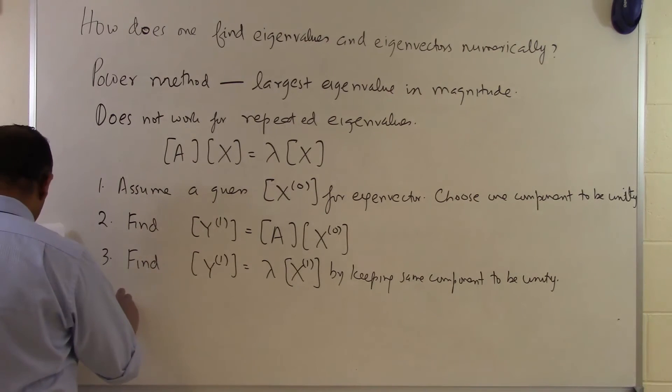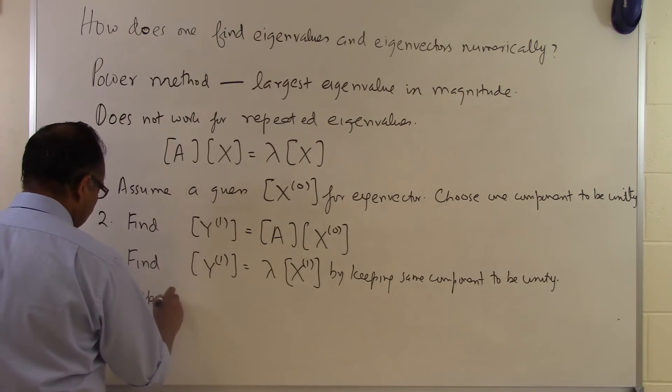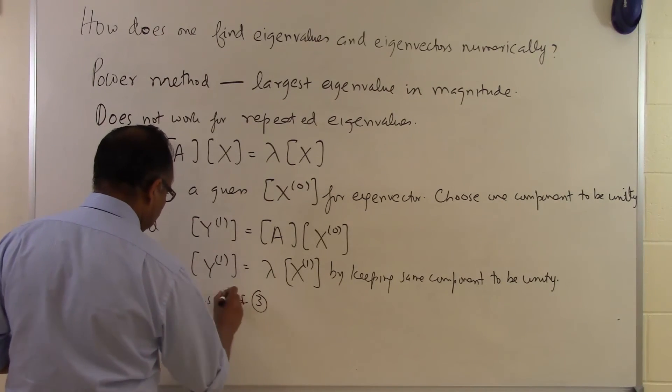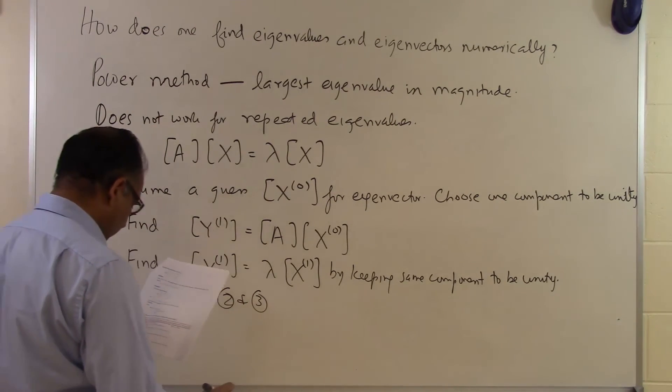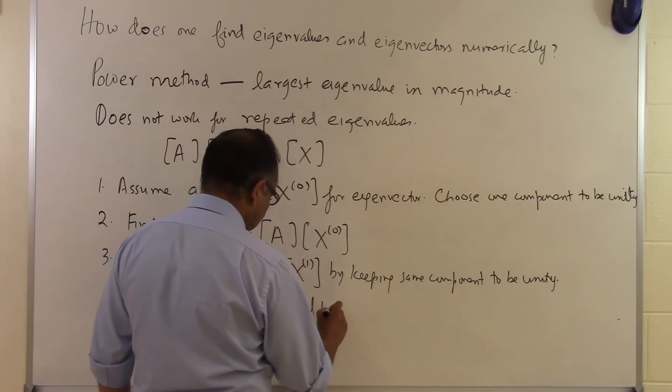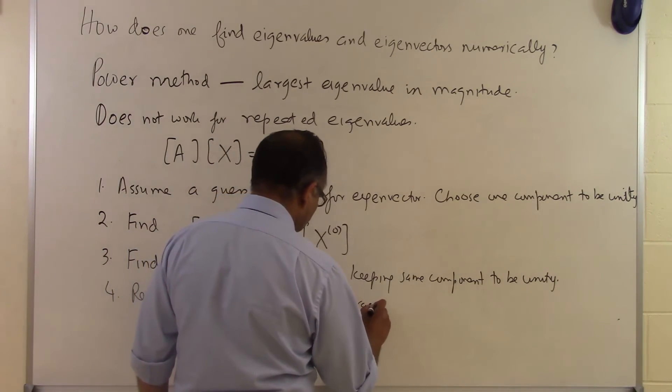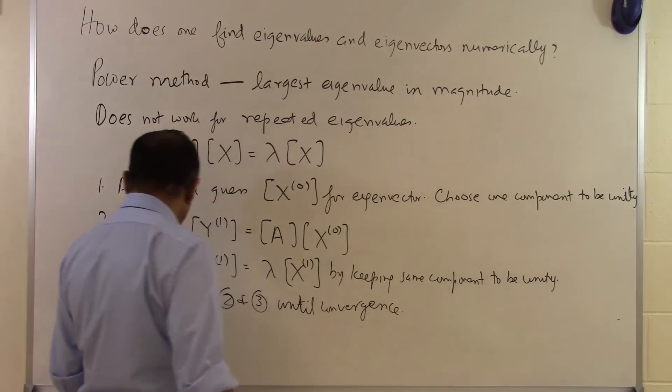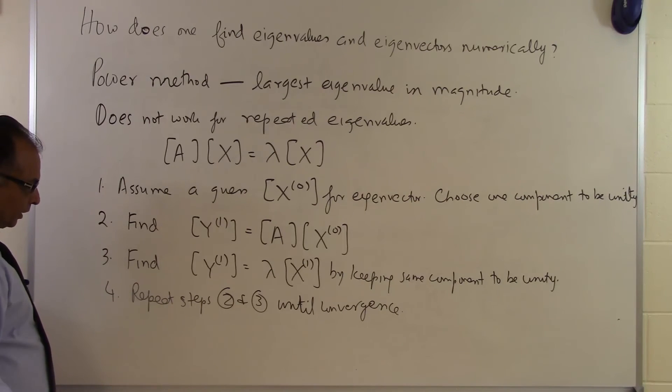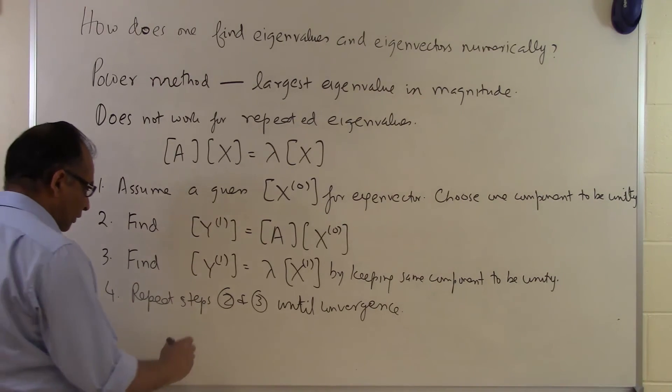It now becomes a repetition process. Repeat steps 2 and 3 until convergence. You're going to repeat steps 2 and 3 until you find that the λ value you're getting is converging. How do you check for convergence?